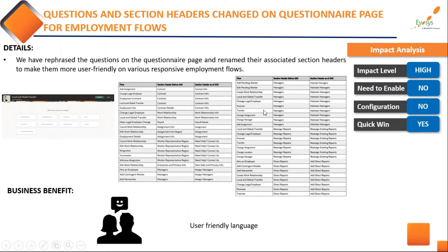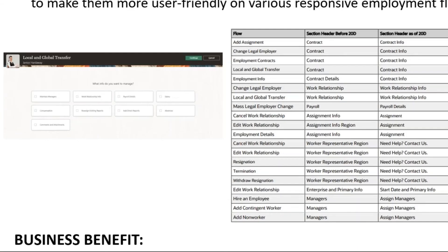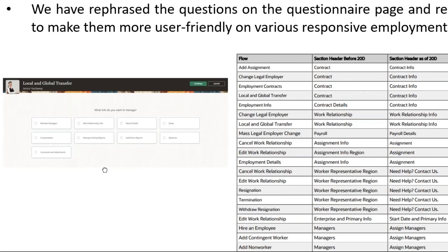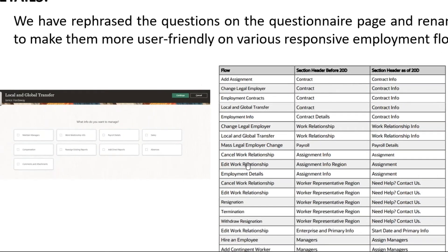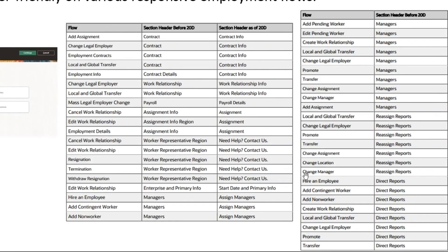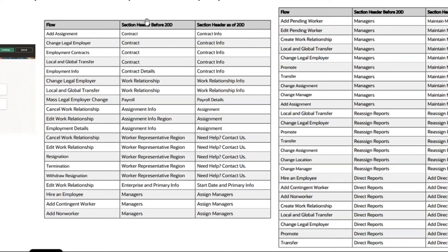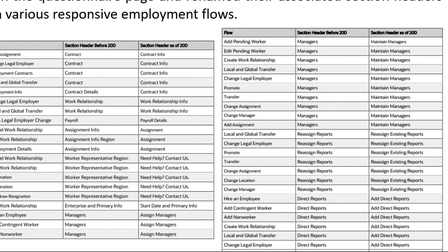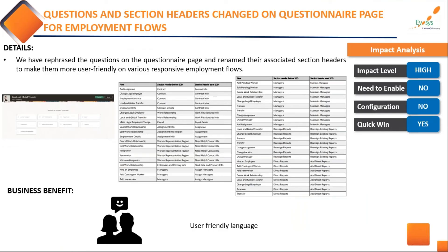There are also some user-friendly UI changes — certain questionnaire and question titles have been rephrased. For example, 'contract' is now renamed 'contract info' and 'assignment info' is renamed 'assignment.' These are important for end users with a non-IT background who may get confused with rephrased labels, so this should be communicated to your users as part of the release.